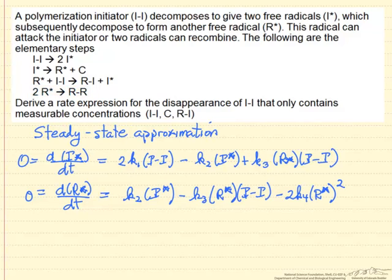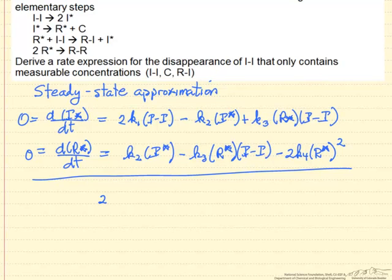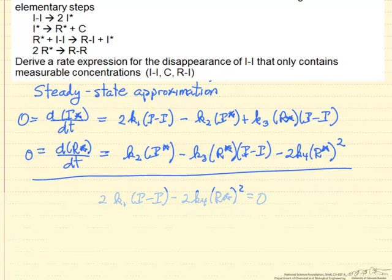Now we want an expression that does not have R* and I*, and it turns out we can add these equations to help us do that. If we add the equations we end up with 2k₁ times the concentration of the initiator minus 2 times k₄, so we have an equation that allows us to solve for R*.